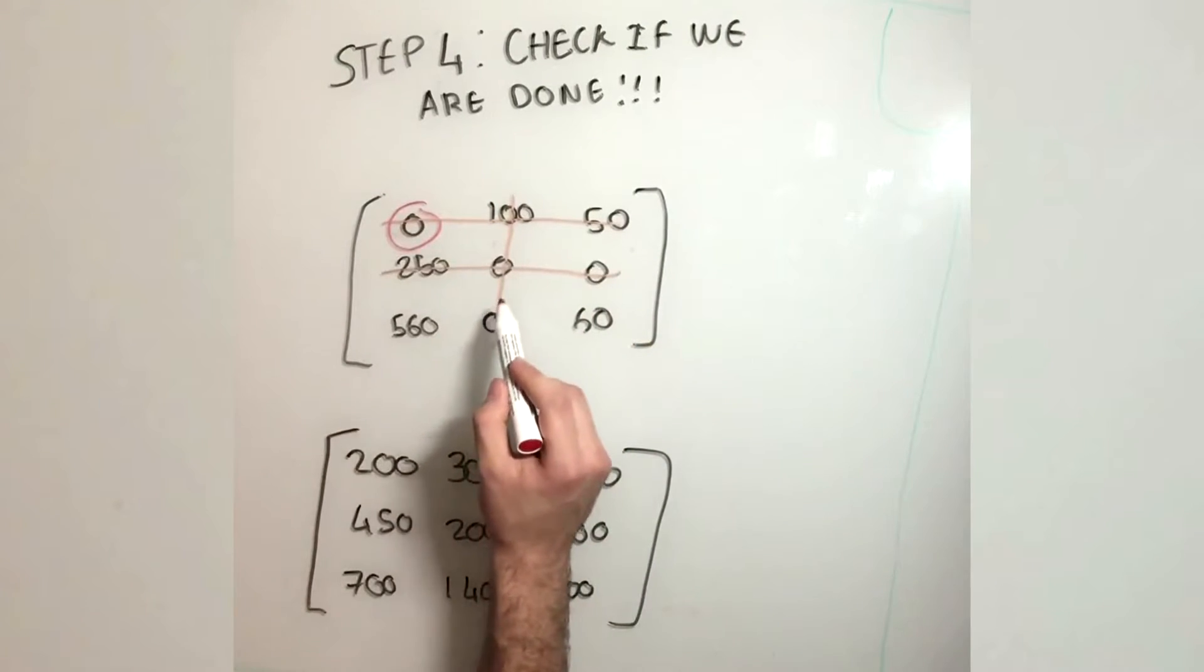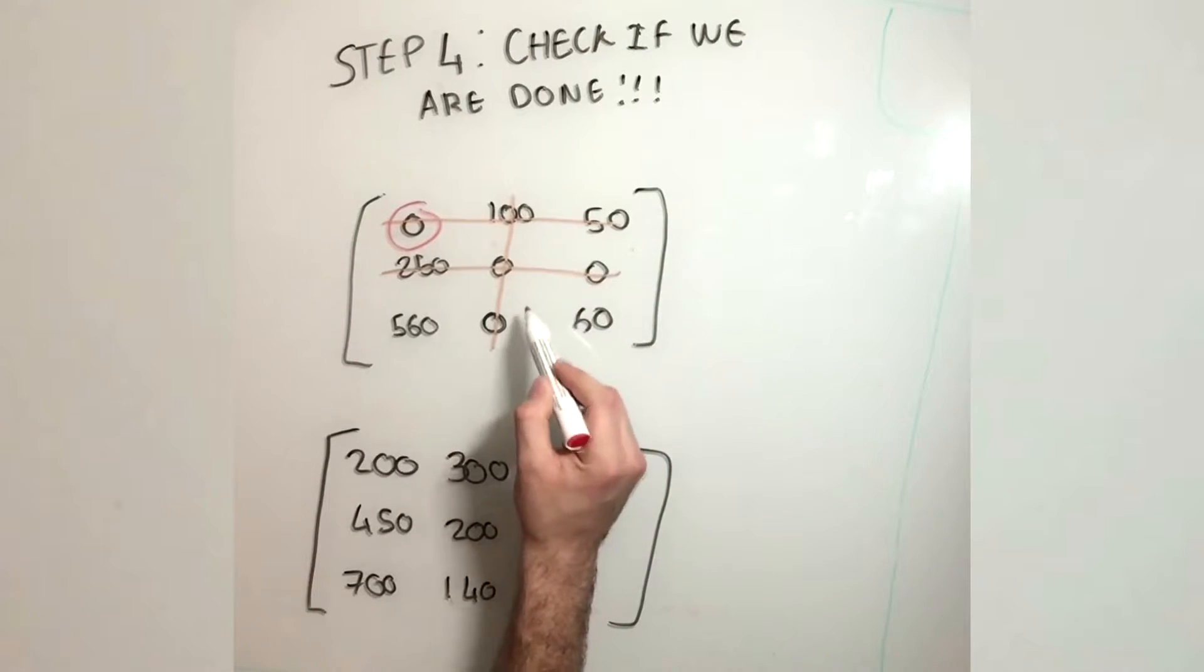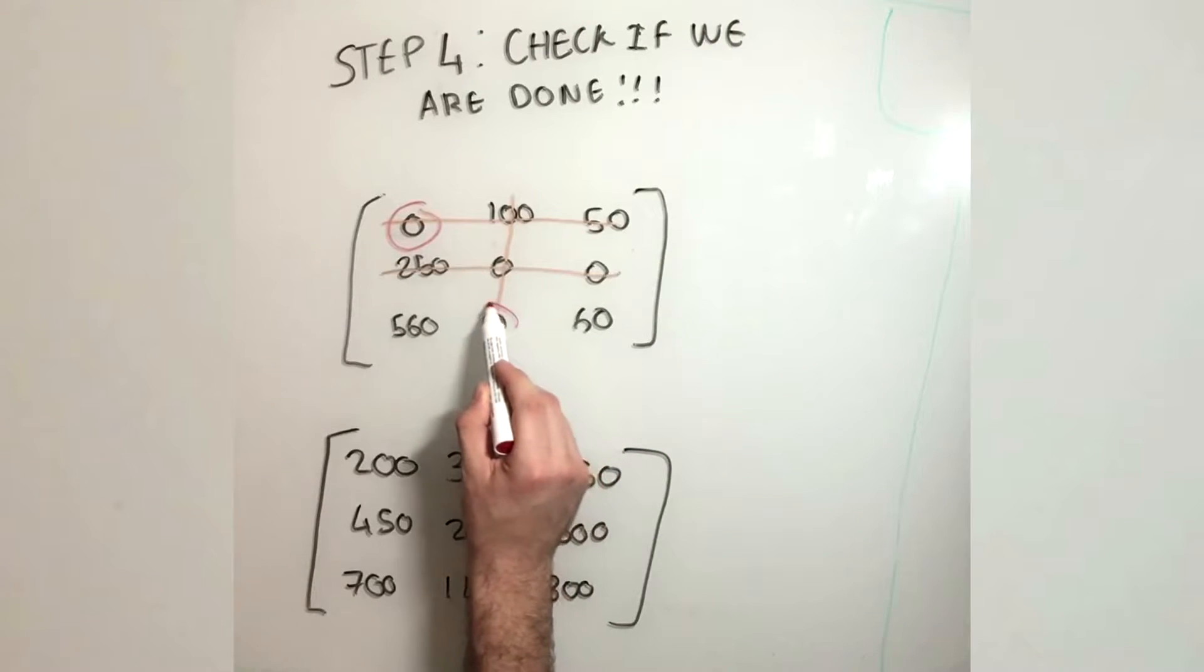However, the 0 in the center is not by itself in its own column or row. Hence, we move on to its neighbors of 0. Both of these are either in its own row or column. Hence, they are chosen.